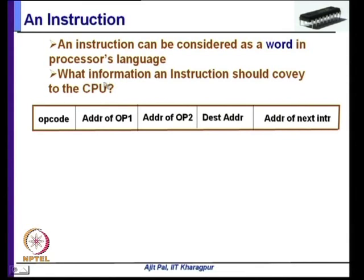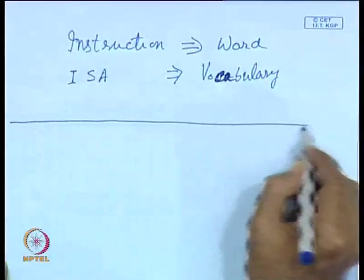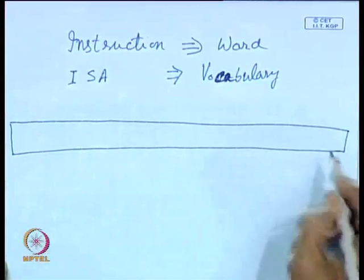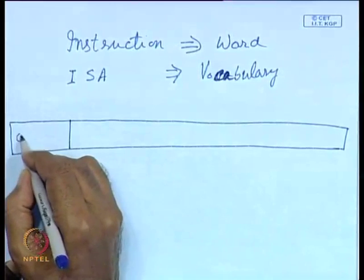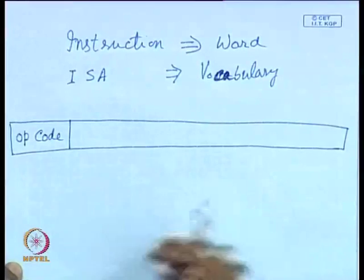The question naturally arises: what information should an instruction convey to the CPU? Just as a word should convey some meaning in traditional language, an instruction should convey something to the processor. An instruction can be represented by an instruction format, with different components represented by different fields. First, an instruction should convey the opcode — the operation to be performed. The processor executes instructions one after the other, so it must know what operation to perform, such as arithmetic or logical operations.